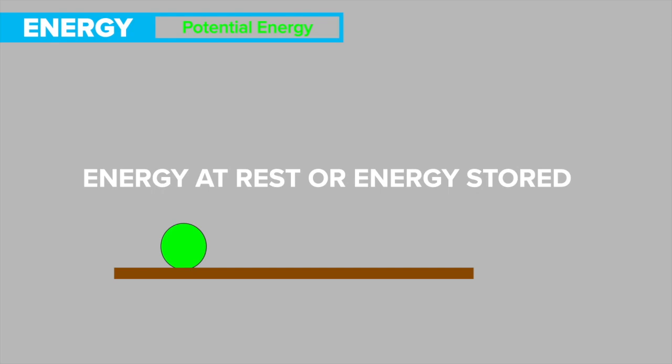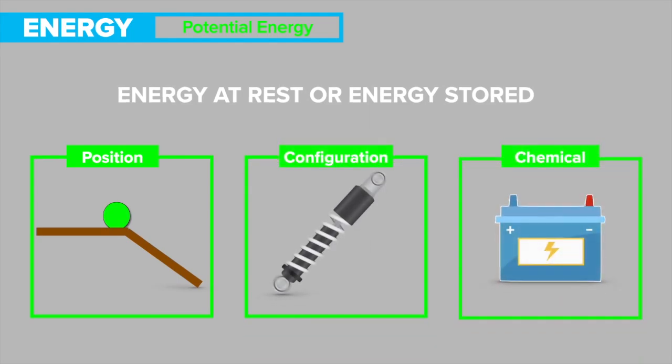Because of this, it can be classified into three types: position, configuration, and chemical. There are more classifications beyond these three, but for the purpose of this video we will only focus on these.